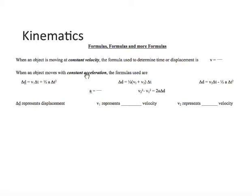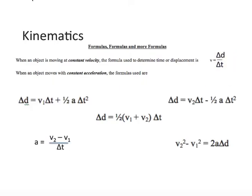When an object is moving at constant velocity, a formula used to determine time or displacement is displacement over time, or in the case of speed, distance over time. That's something we already reviewed in the previous videos. However, when an object moves with constant acceleration, we have five formulas. Here are the five formulas that we could potentially use. Please note, you can only use any of these formulas when we have constant acceleration.